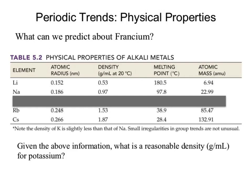So, physical properties — this gets back to Mendeleev and what's really cool about this. We're going to focus on the bottom question: given the information above, what is a reasonable density for potassium? People are looking all sorts of places — periodic table, slides, both are fine. What are you looking for? You're looking for the densities of elements in the same column — somewhere between rubidium and sodium.